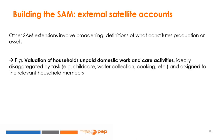Having discussed internal satellite accounts, we now move on to external satellite accounts. Building external satellite accounts in a SAM is a crucial step for accurately representing interactions between the paid market economy and the unpaid non-market economy. These extensions involve broadening definitions of what constitutes production or assets. Examples are accounts that use data from time use surveys combined with other gender statistics to evaluate a household's own domestic work and care activities, ideally differentiated by tasks such as food preparation, childcare, and water collection.